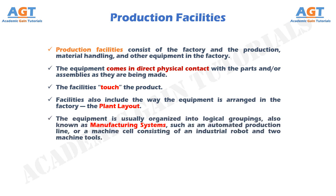The equipment is usually organized into logical groupings, which in our discussion classes will be called manufacturing systems — such as an automated production line or a machine cell consisting of an industrial robot and two machine tools. A manufacturing company attempts to design its manufacturing systems and organize its factories to serve the particular mission of each plant in the most efficient way.